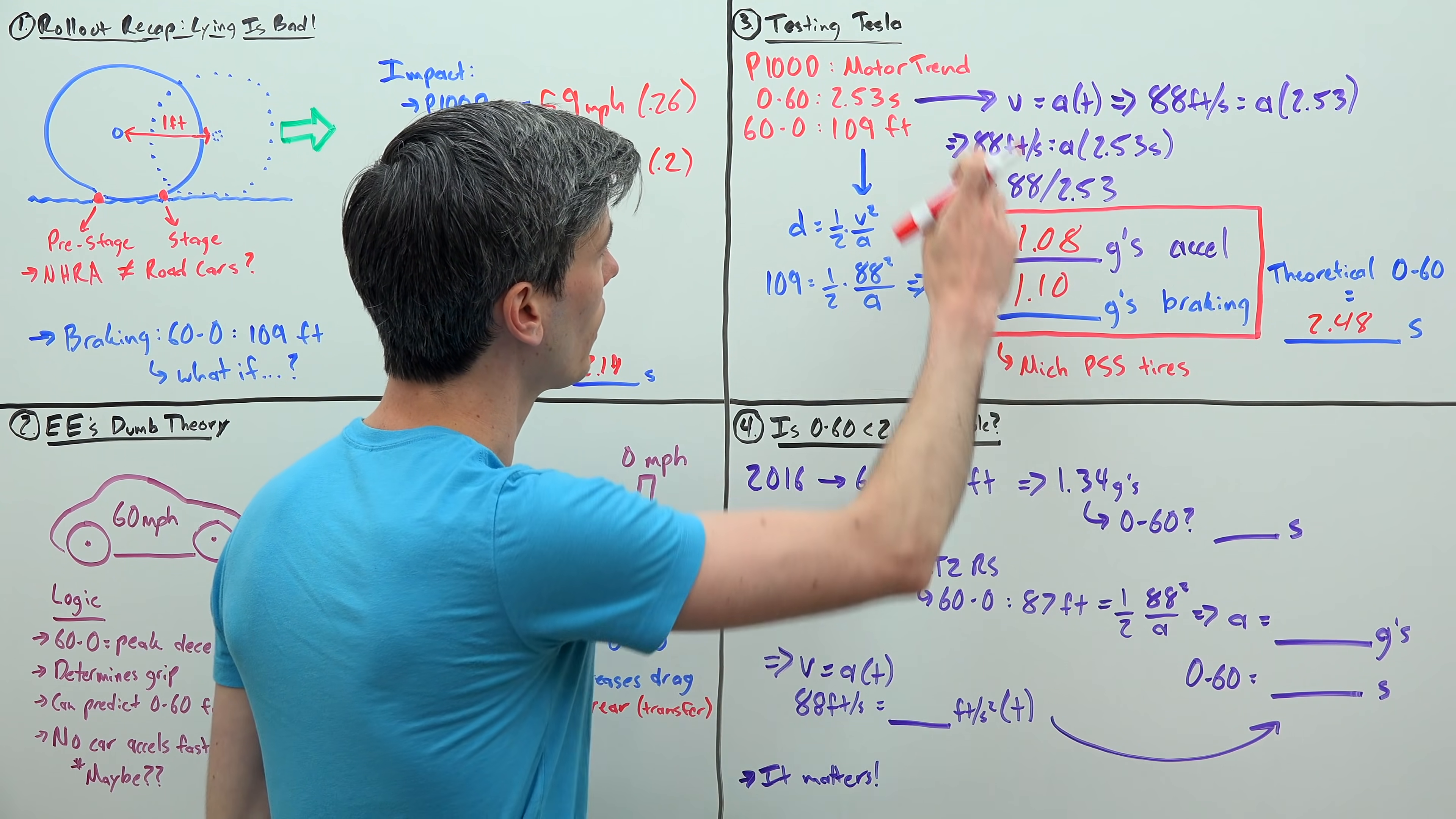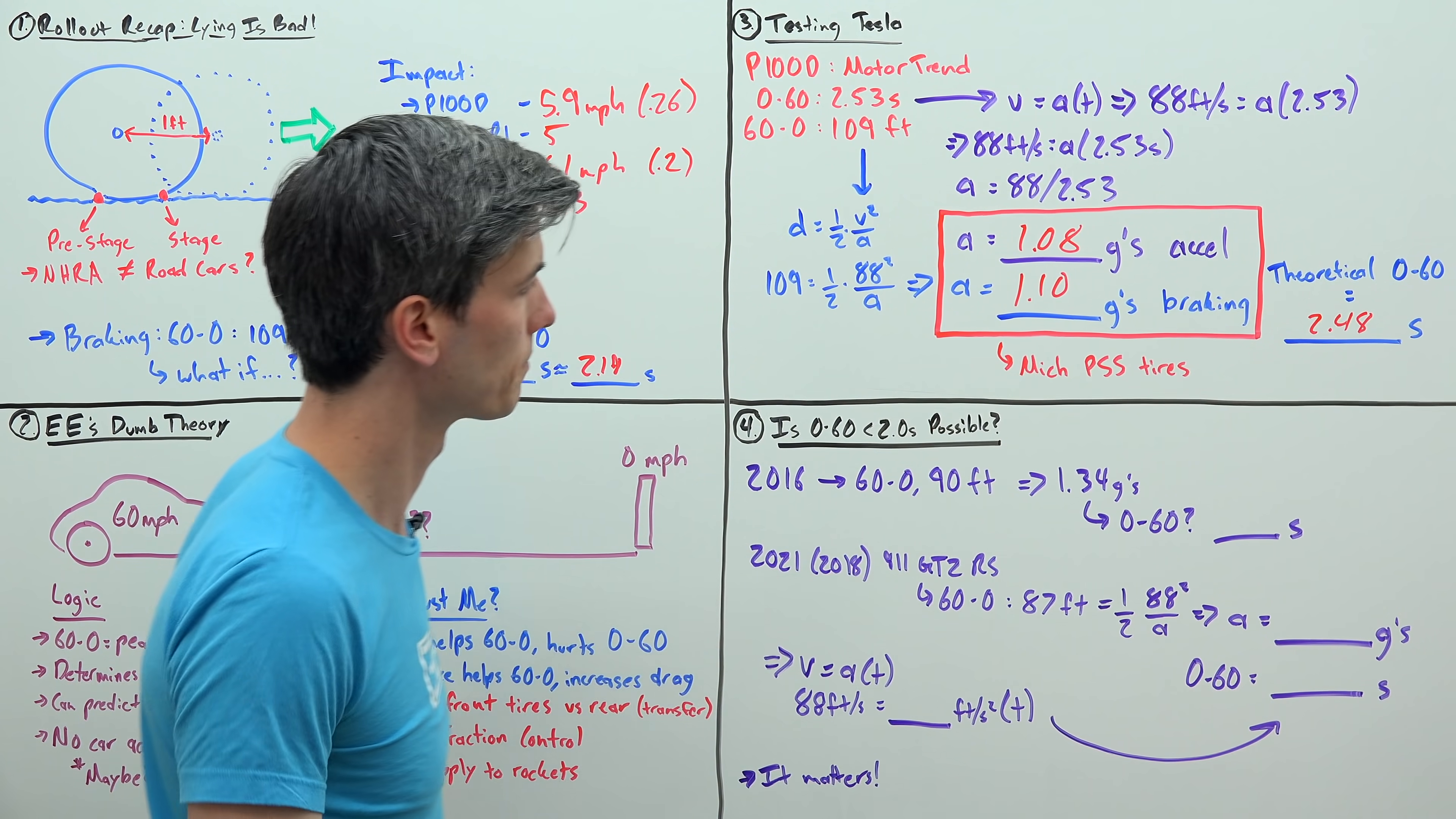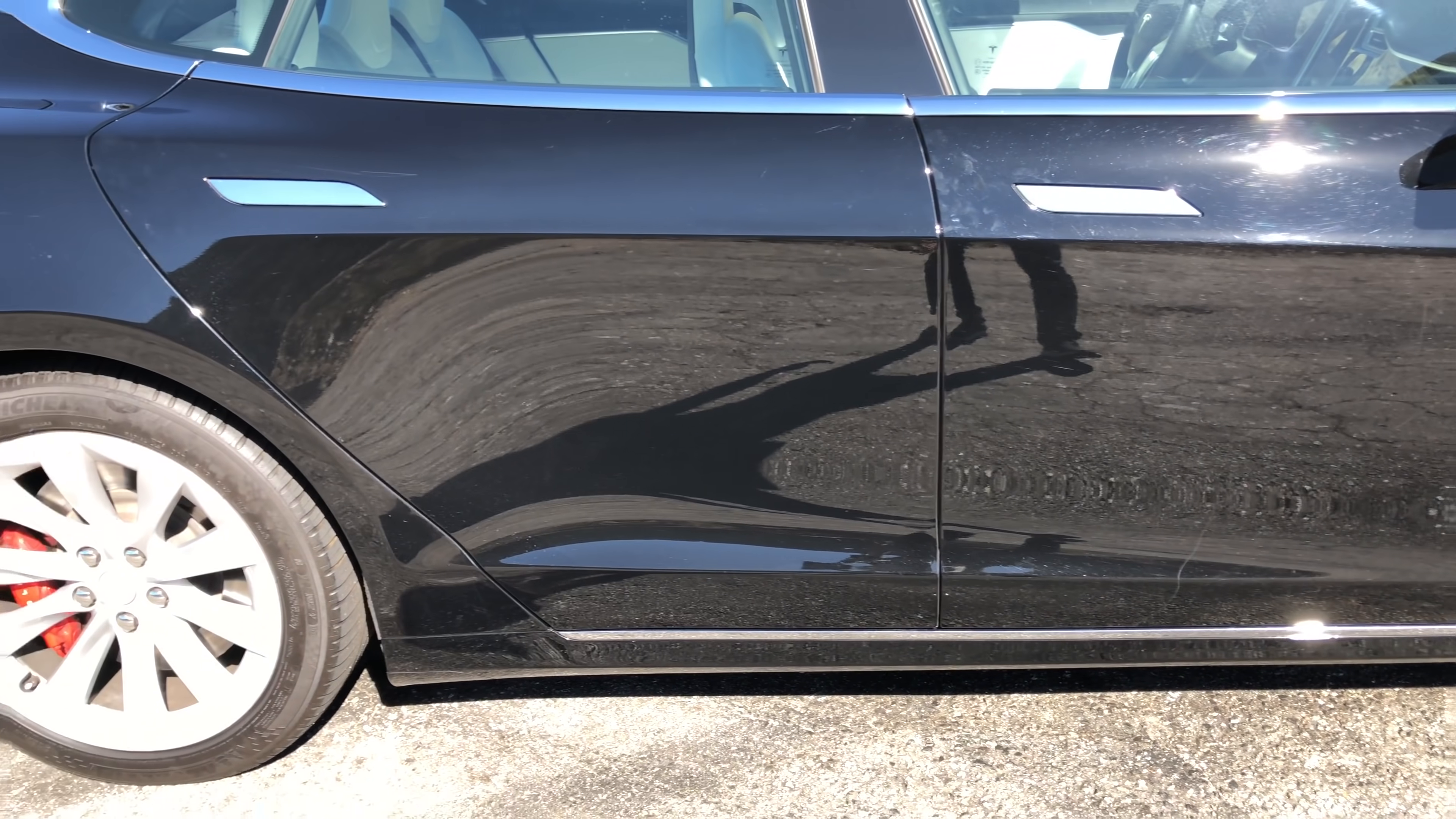So fairly close in predicting what's that 0 to 60 actually going to be, and also not breaking a rule of decelerating quicker than you're accelerating. Now, it's worth mentioning that this P100D was riding on Michelin Pilot Supersport tires, and there are better tires available today. So that means more traction, which means potentially a faster car.